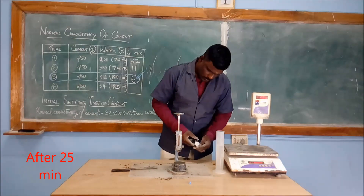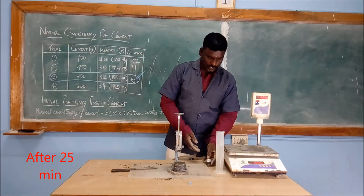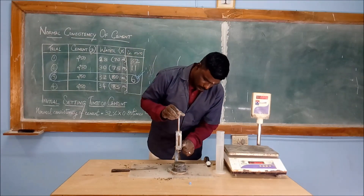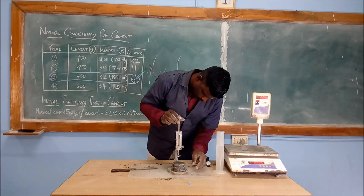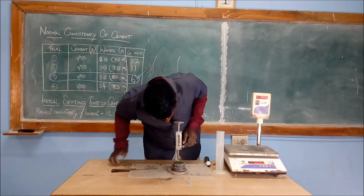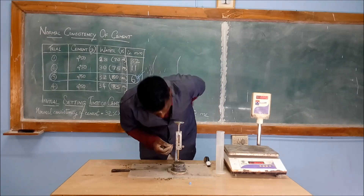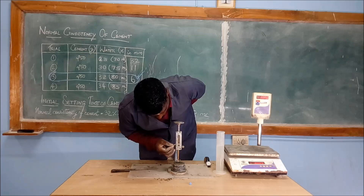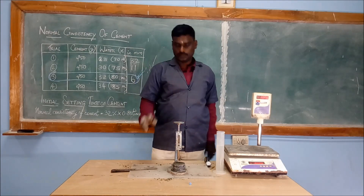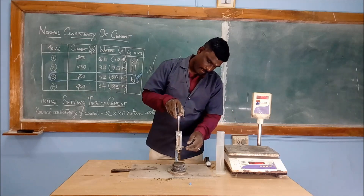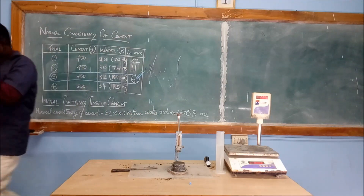After twenty-five minutes, we are checking the time again. After twenty-five minutes, we are slowly releasing the knob and the Vicat needle plunges inside the mould. Here you can see zero and ten on the scale — the pointer indicates a reading of two. It has been placed back in the original position.